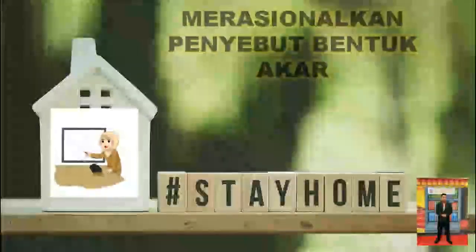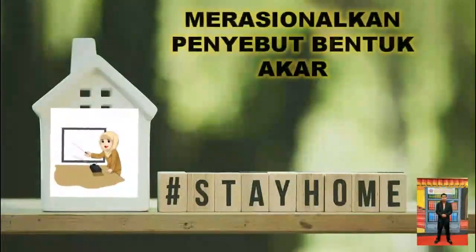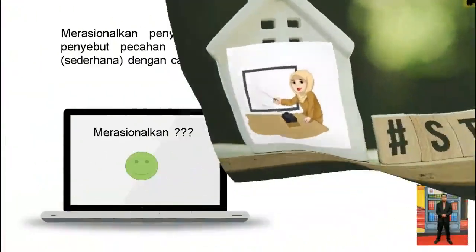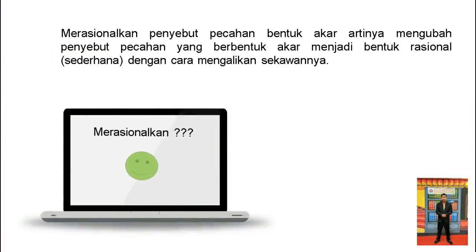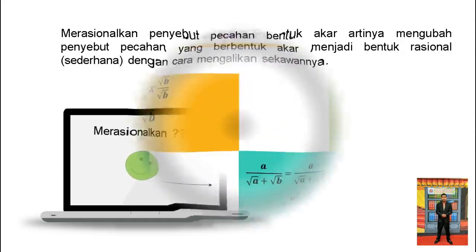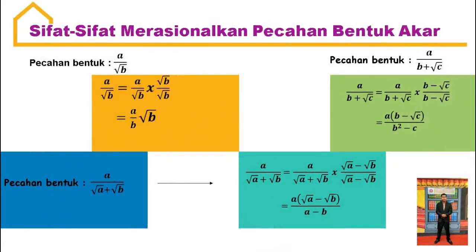Oke, pada pertemuan hari ini kita akan belajar tentang merasionalkan penyebut bentuk akar. Merasionalkan penyebut pecahan bentuk akar artinya adalah mengubah penyebut pecahan yang berbentuk akar menjadi bentuk rasional dengan cara mengalikan sekawannya. Di sini ada sifat-sifat merasionalkan pecahan bentuk akar.